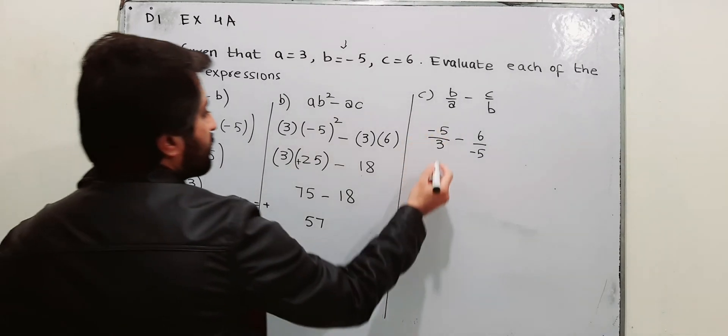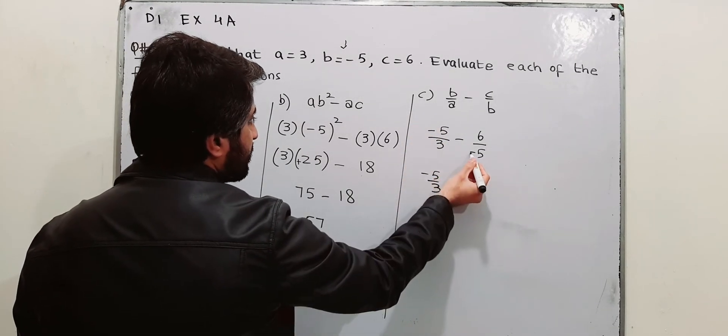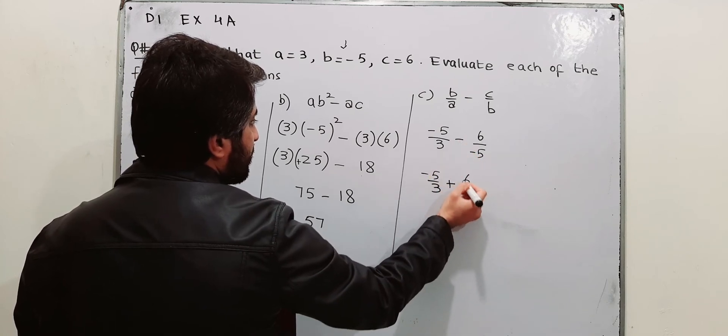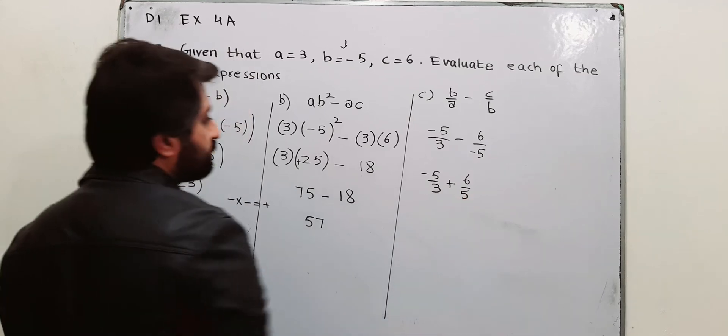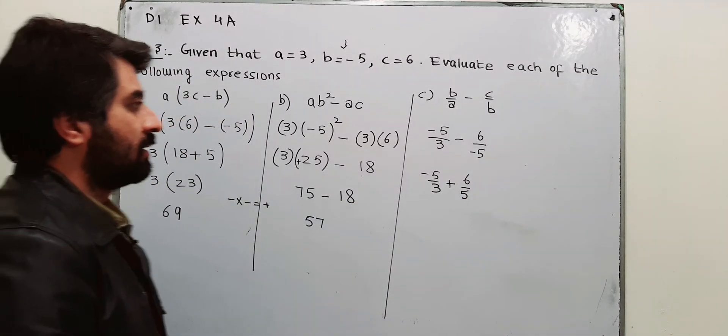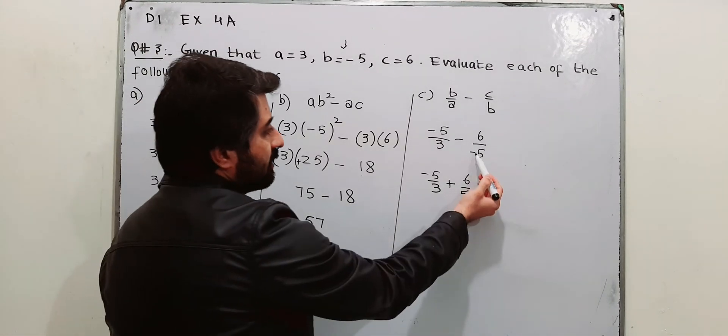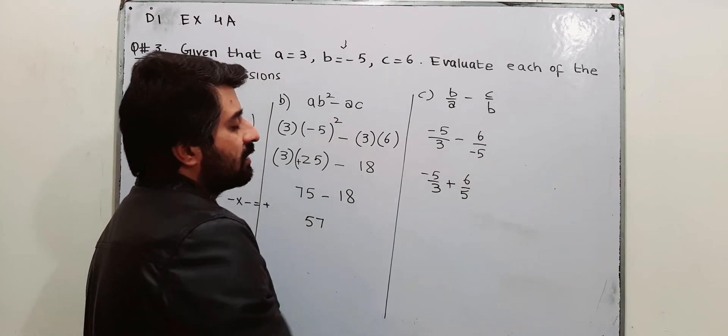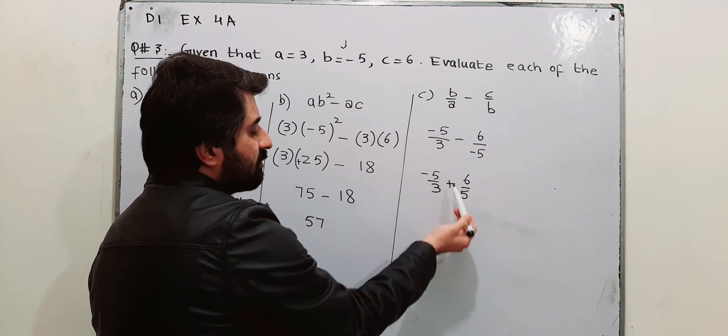This becomes minus 5 by 3. Minus and minus, you can multiply them. Minus into minus becomes plus 6 over 5. Basically, I have used this sign. Actually, this negative is with this fraction 6 over 5. Negative and negative becomes positive.